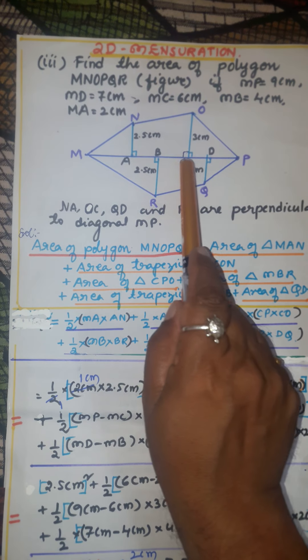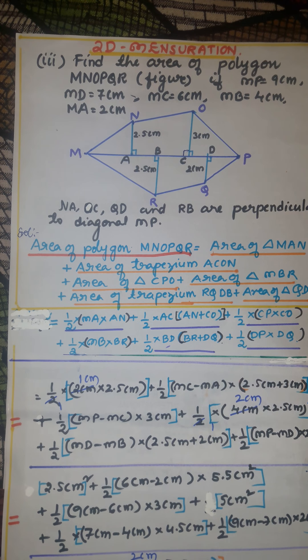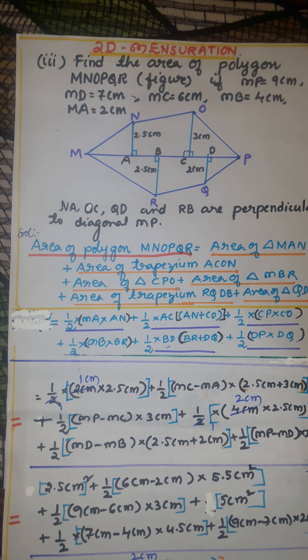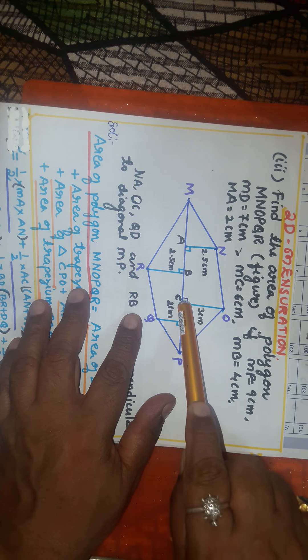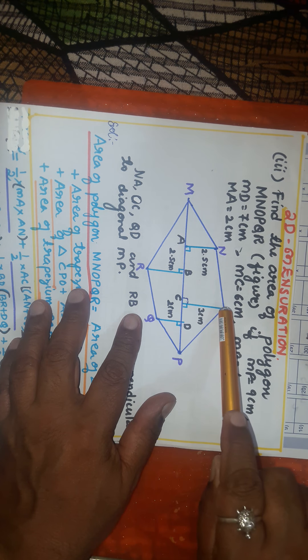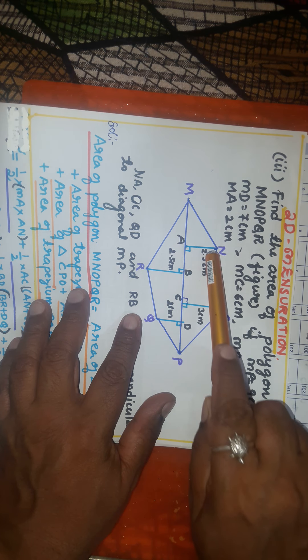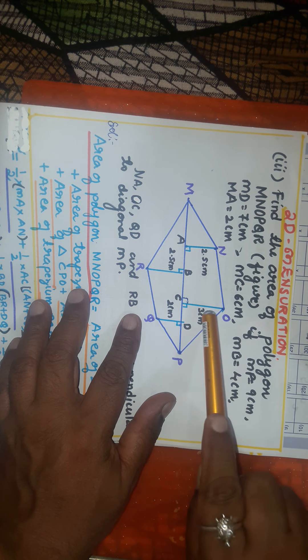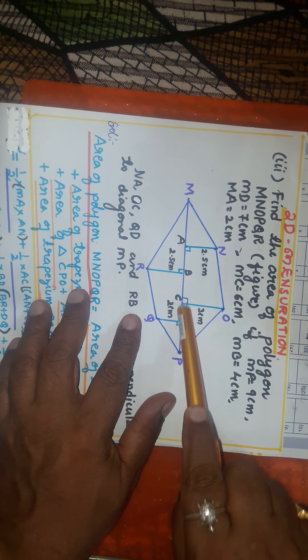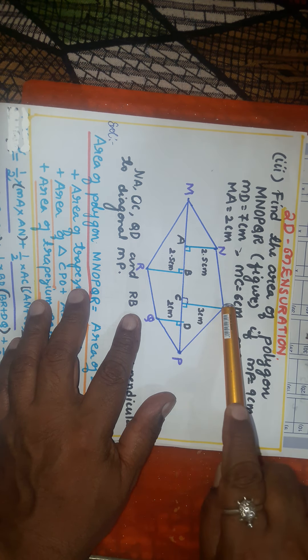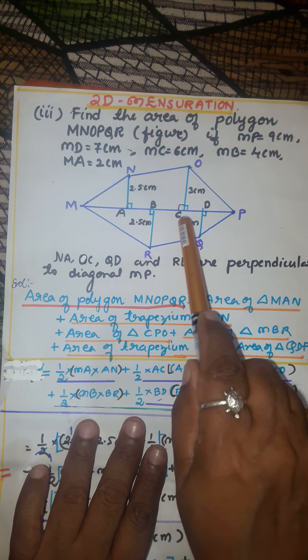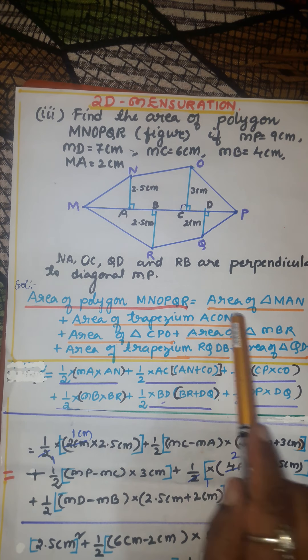Therefore, the formula is half into height AC into the sum of parallel sides AN plus CO. AN and CO are the parallel sides. AN is 2.5 cm and CO is 3 cm. So it is half into AC into AN plus CO. Area of trapezium ACON is complete.